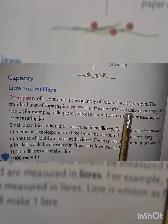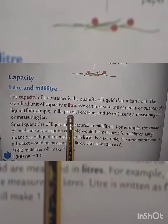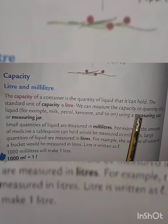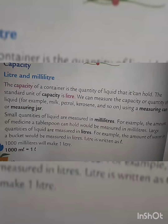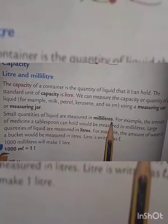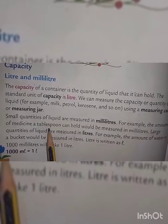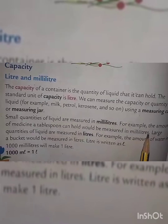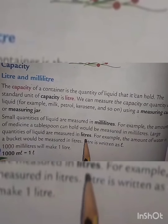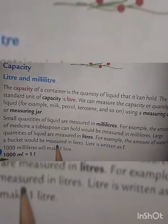We can measure the capacity or quantity of a liquid — for example, milk, petrol, kerosene, and so on — using a measuring can or measuring jar. Small quantities of liquid are measured in milliliters. For example, the amount of medicine a tablespoon can hold would be measured in milliliters. Large quantities of liquid are measured in liters. For example, the amount of water in a bucket would be measured in liters.